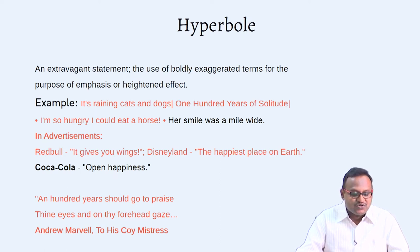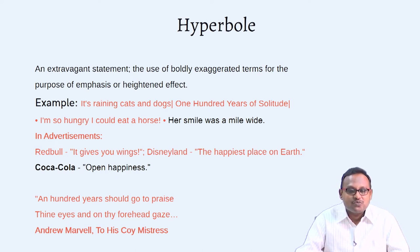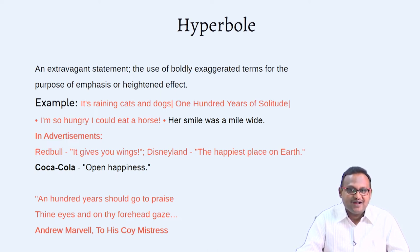'An hundred years should go to praise thine eyes and on thy forehead gaze.' The poetic persona says to his beloved: probably I might need a hundred years in order to praise you — probably the highest compliment you could give to your beloved. Or even 'One Hundred Years of Solitude' — the famous novel by García Márquez — again hyperbole.